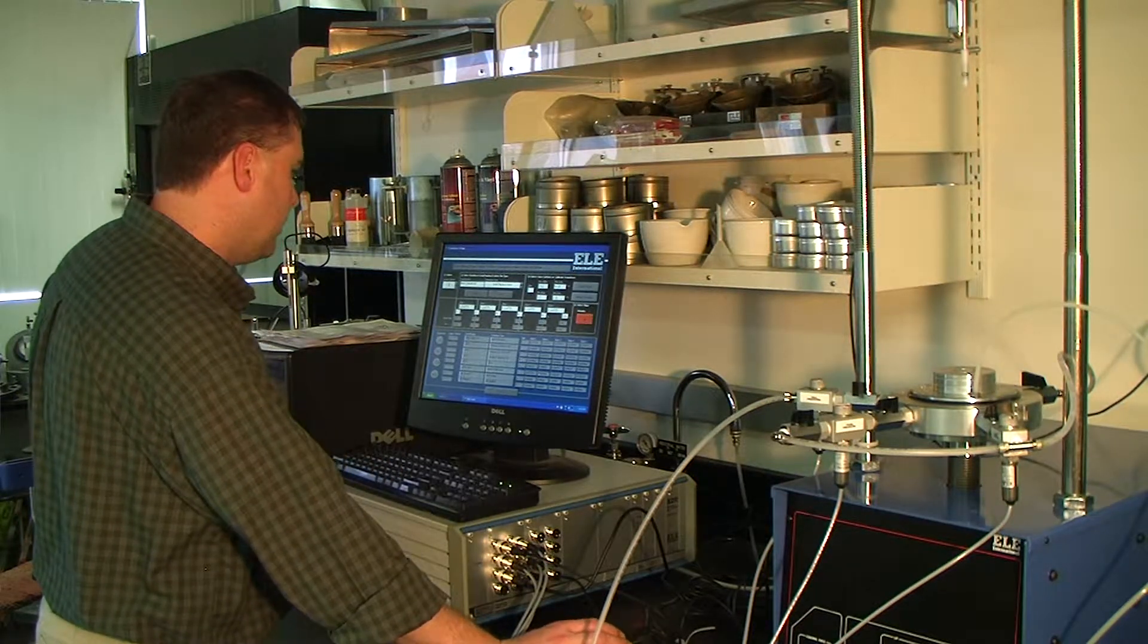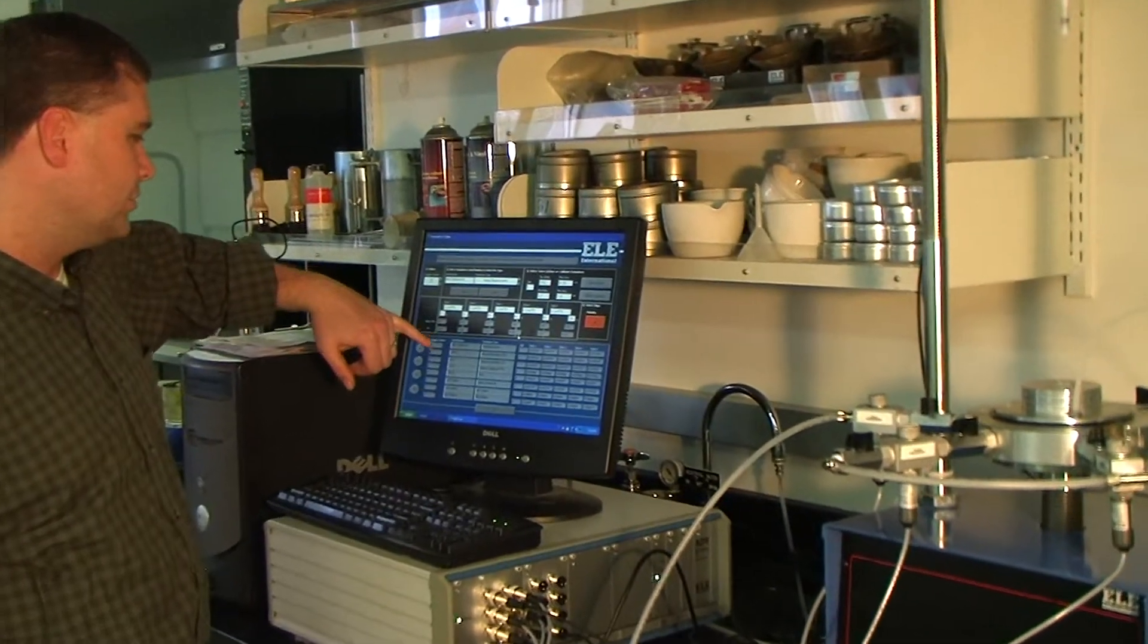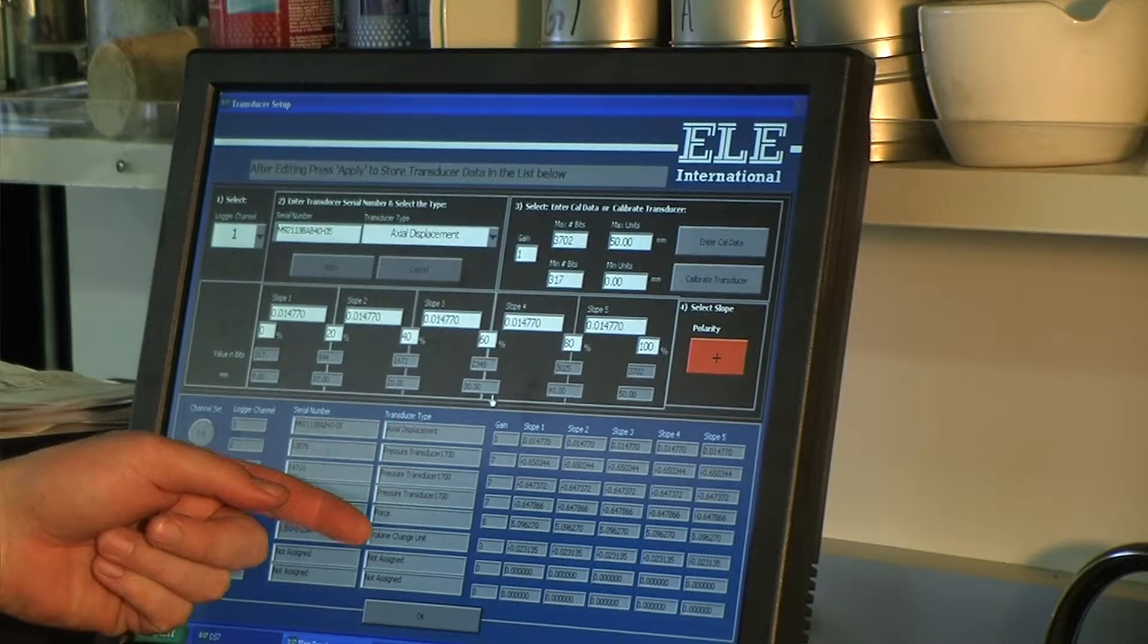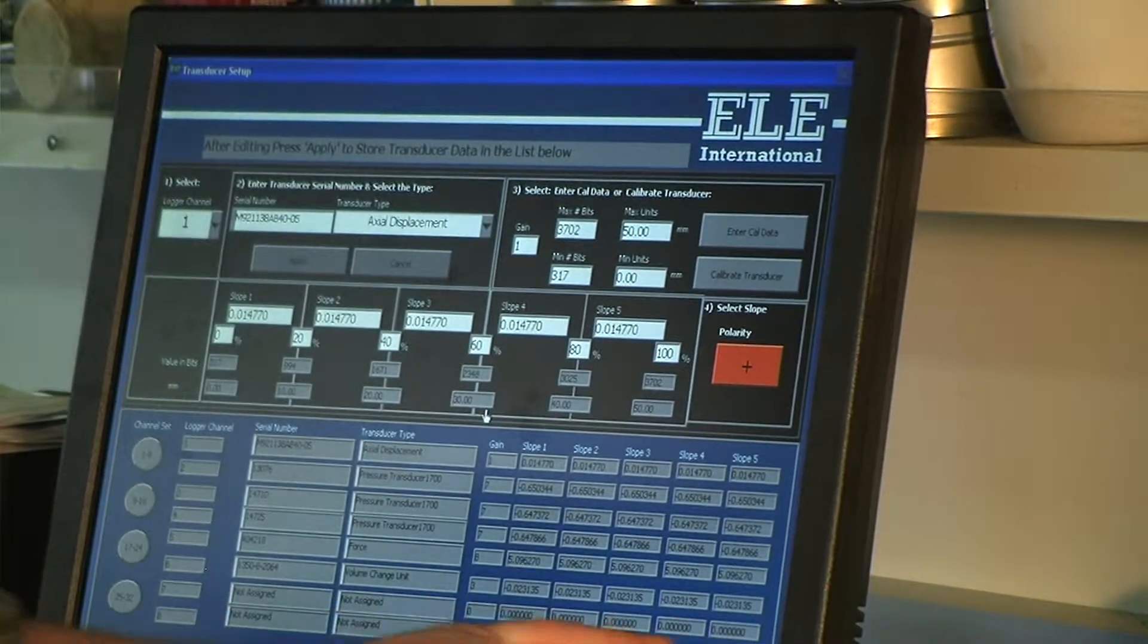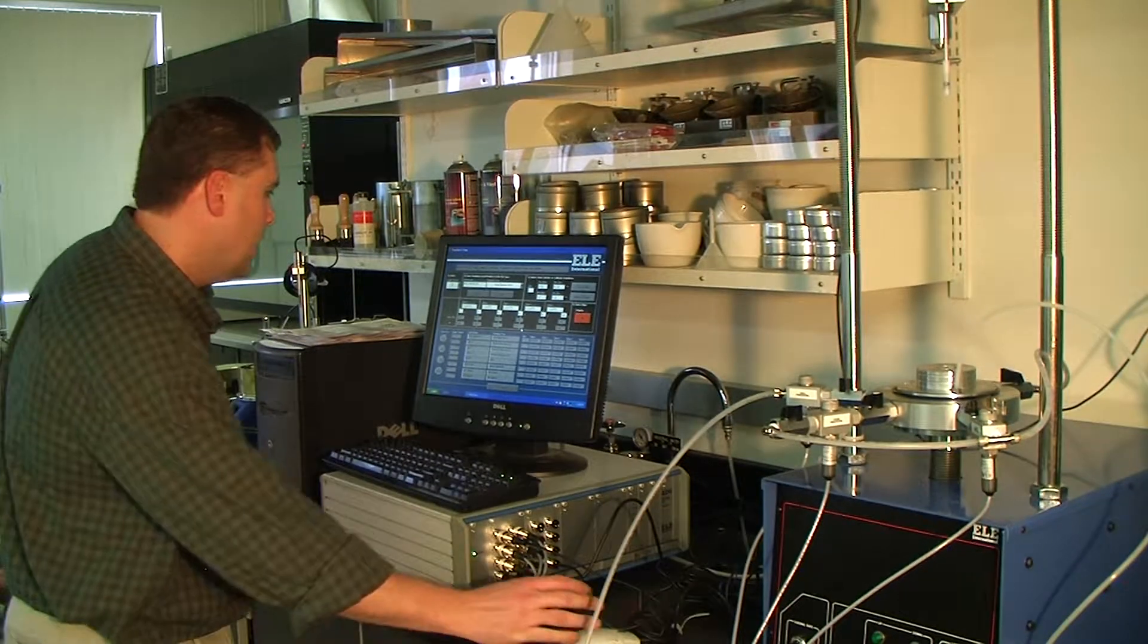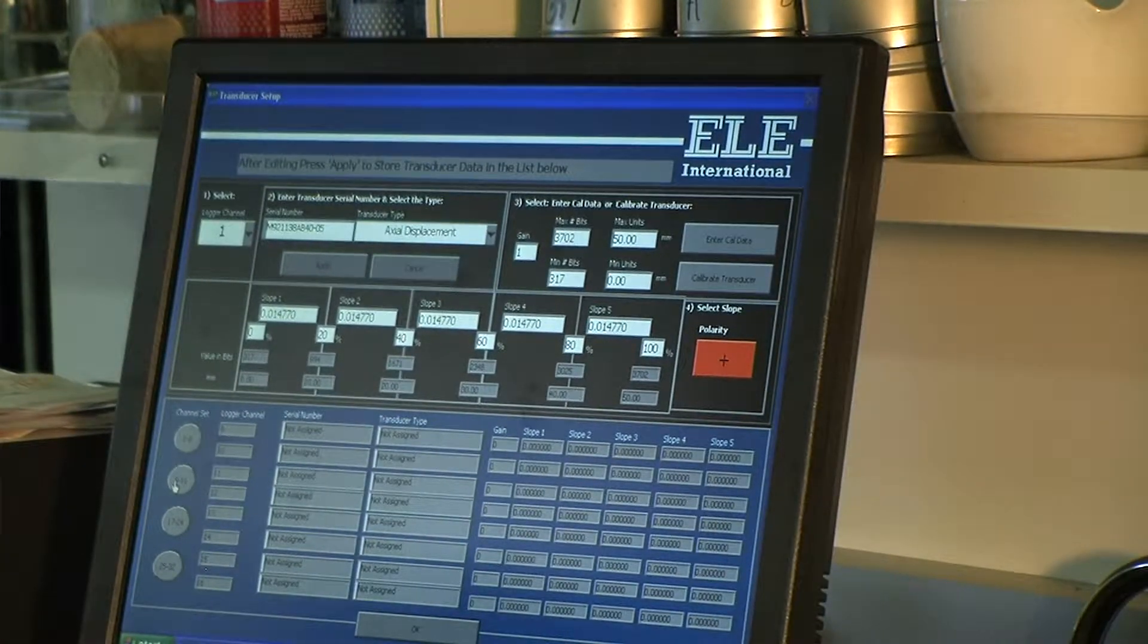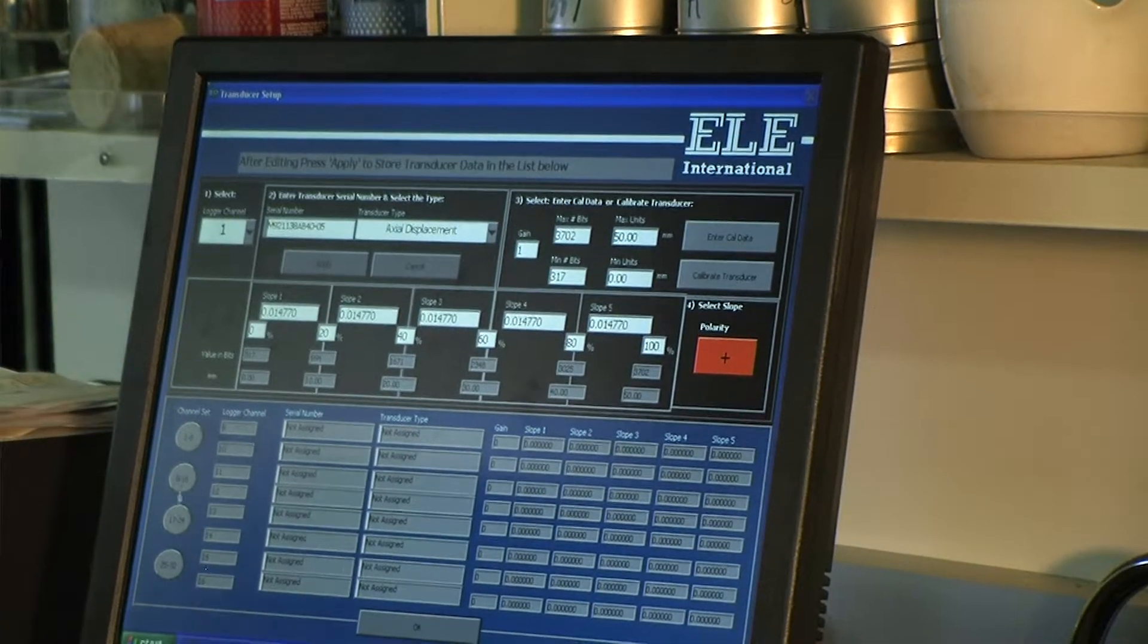The last thing we want to do here is show that we have all of the transducers calibration information in. Notice that you have channels one through six, you have serial numbers, the type of transducers which are quite different, the gains in the slopes, and then seven and eight you have not assigned, not assigned in zeros. And if you notice there are no transducers plugged into seven or eight. And if you want to look at this bank of transducers, just click on the channel set here on the left, nine through sixteen, and if you notice we have nothing in there yet, we will. But we have nothing inputted in there as well.